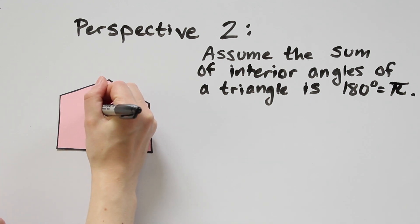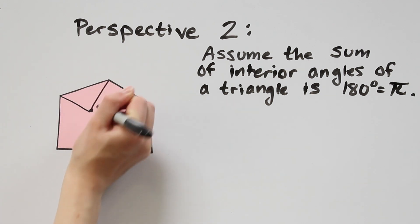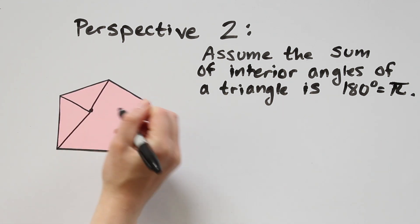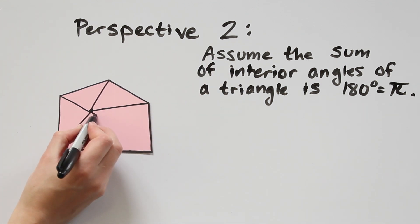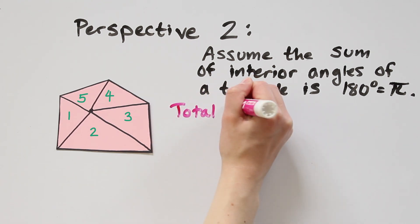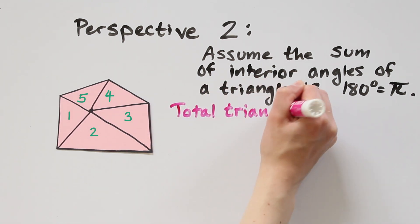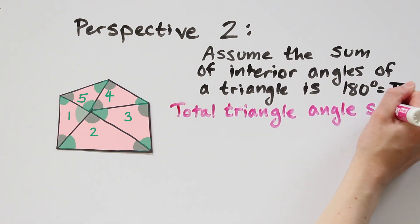Then we can pick any point on the inside of the polygon and connect all of the vertices to that point. This will divide our polygon into n triangles, one for each side. Because of our assumption about triangles, there is a total angle sum of pi times n for all of the interior angles of the triangles.